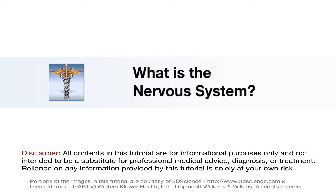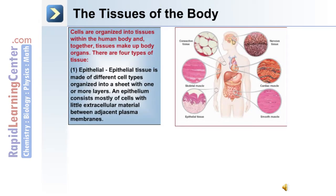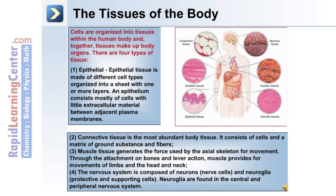Let's begin with an overview of the nervous system. There are four main types of tissue in the human body: epithelial tissue, connective tissue, muscle tissue, and nervous tissue. Epithelial tissue is made up of different cell types organized into a sheet, and it consists mostly of cells with little extracellular material between the adjacent plasma membranes.